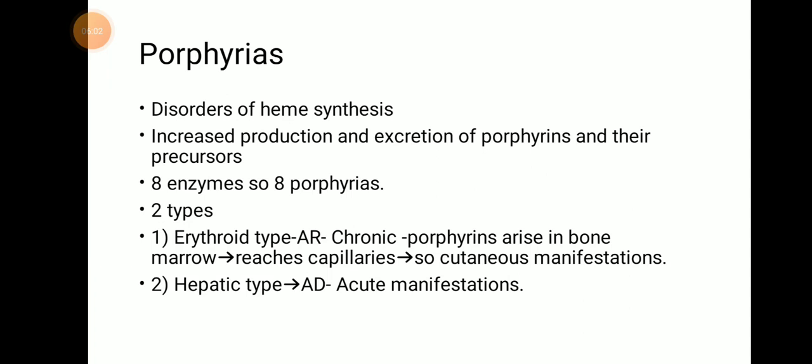Now we will move to porphyrias. Porphyrias are disorders of heme synthesis. If there is a problem in heme synthesis steps, porphyrias will result. They are disorders of heme synthesis, and increased production and excretion of porphyrins and their precursors results in porphyrias. There are 8 enzymes in heme synthesis, so there will be 8 porphyrias — 8 enzyme defects result in 8 porphyrias. These 8 porphyrias are divided into two types: erythroid type and hepatic type.